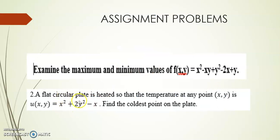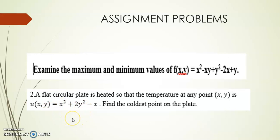Assignment 2: a flat circular plate is heated so that the temperature at any point (x,y) is u(x,y) = x² + 2y² - x. Find the coldest point on the plate. The coldest point refers to the minimum point. Differentiate u with respect to x and y, get the critical point, verify it is a minimum, substitute back to get the coldest temperature value.